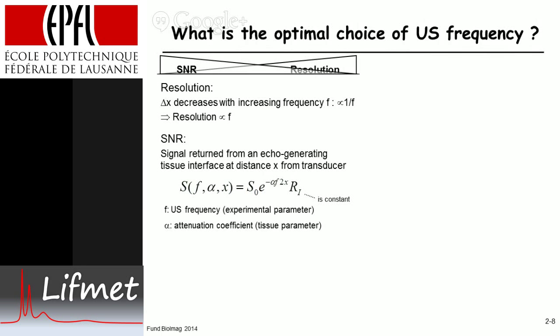Alpha is the attenuation coefficient, that's the tissue property parameter, the one we cannot change, that's given by the subject under investigation. So one would like to increase the frequency but decrease this term here, so there must be an optimal choice between the two.